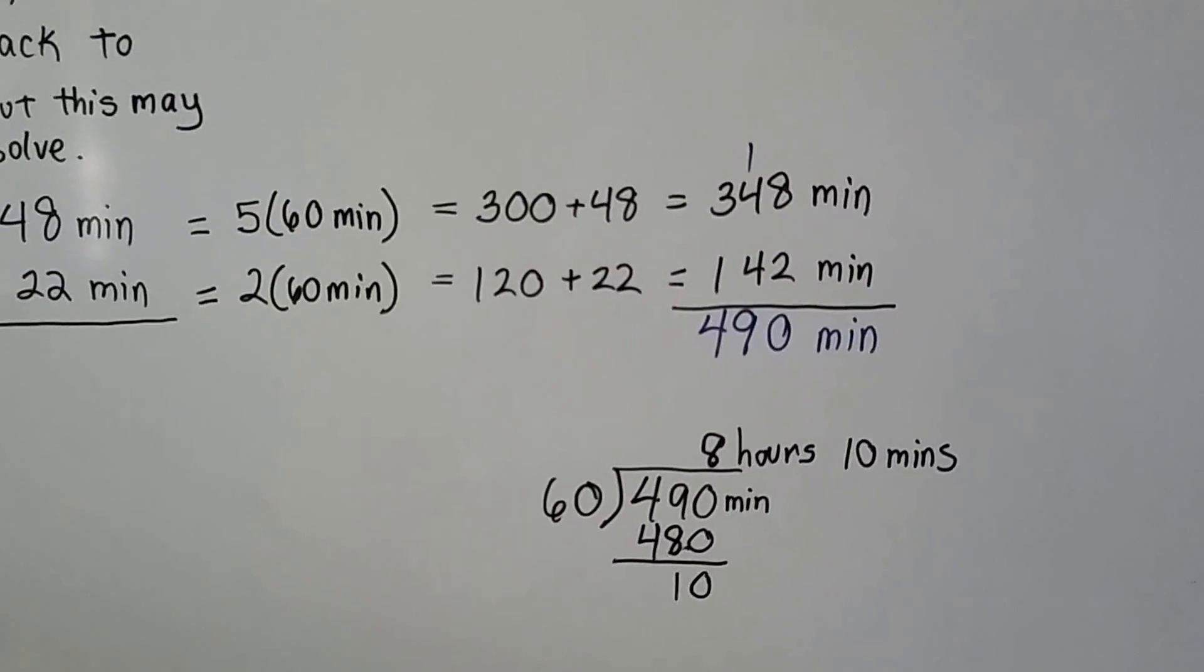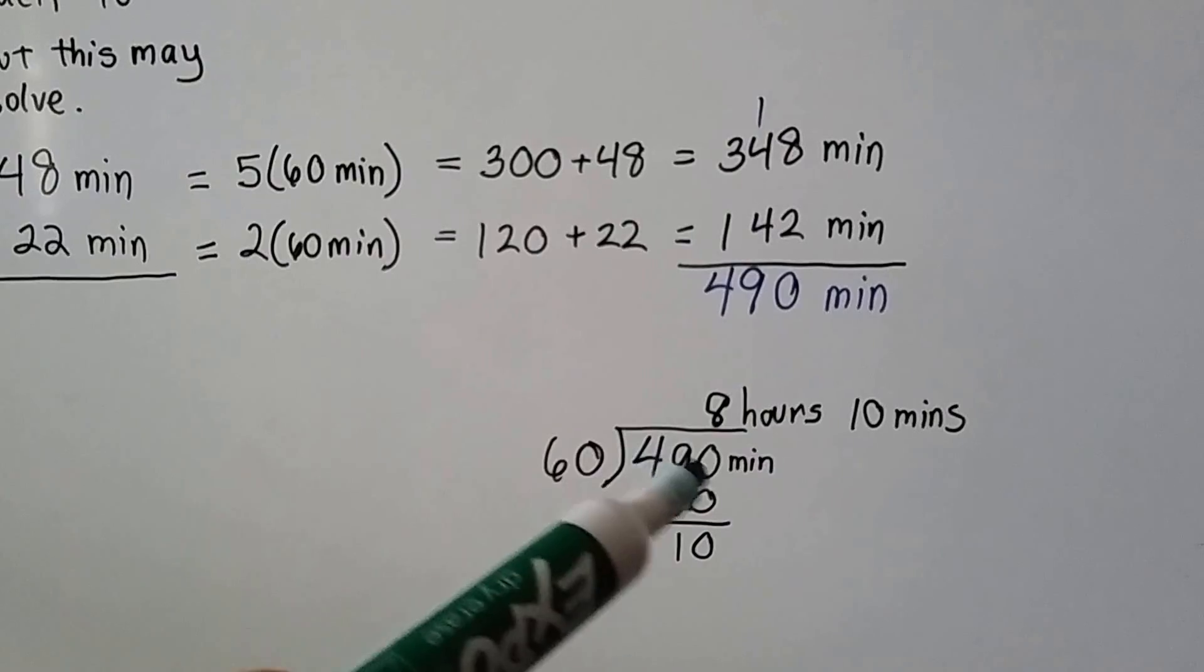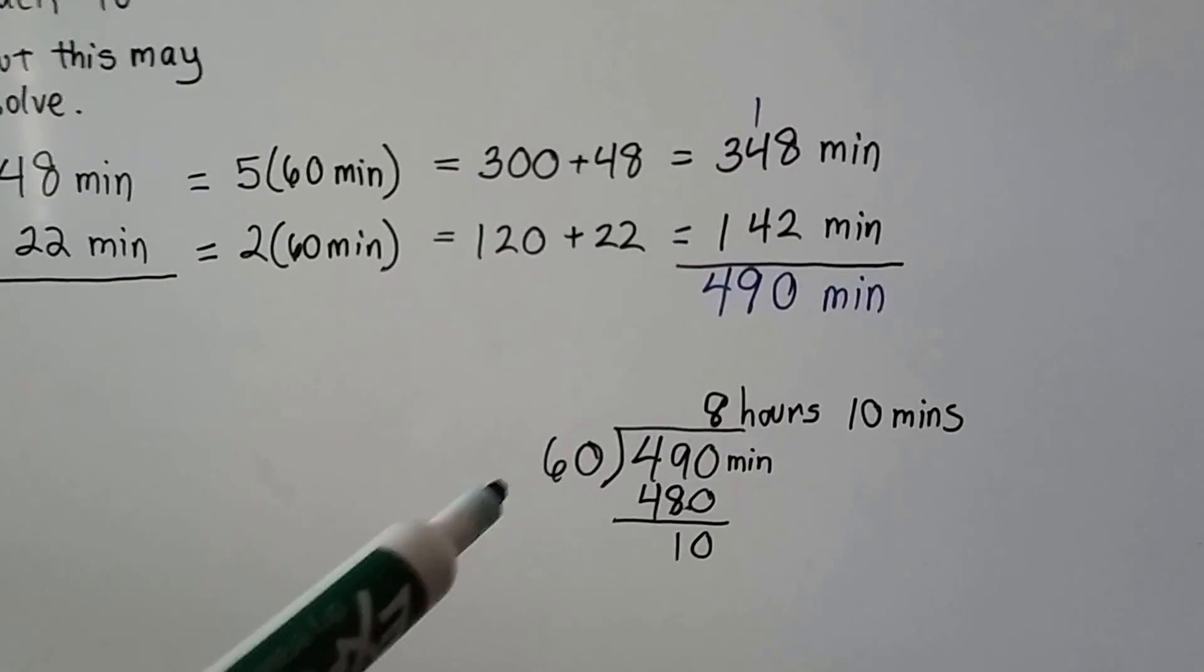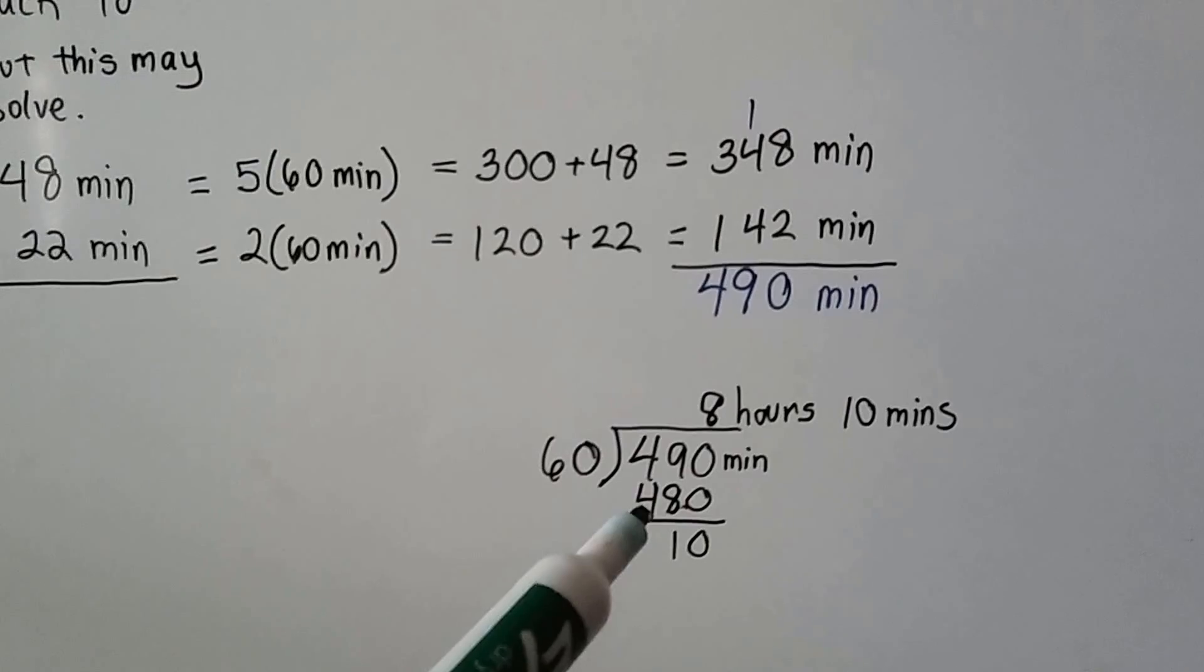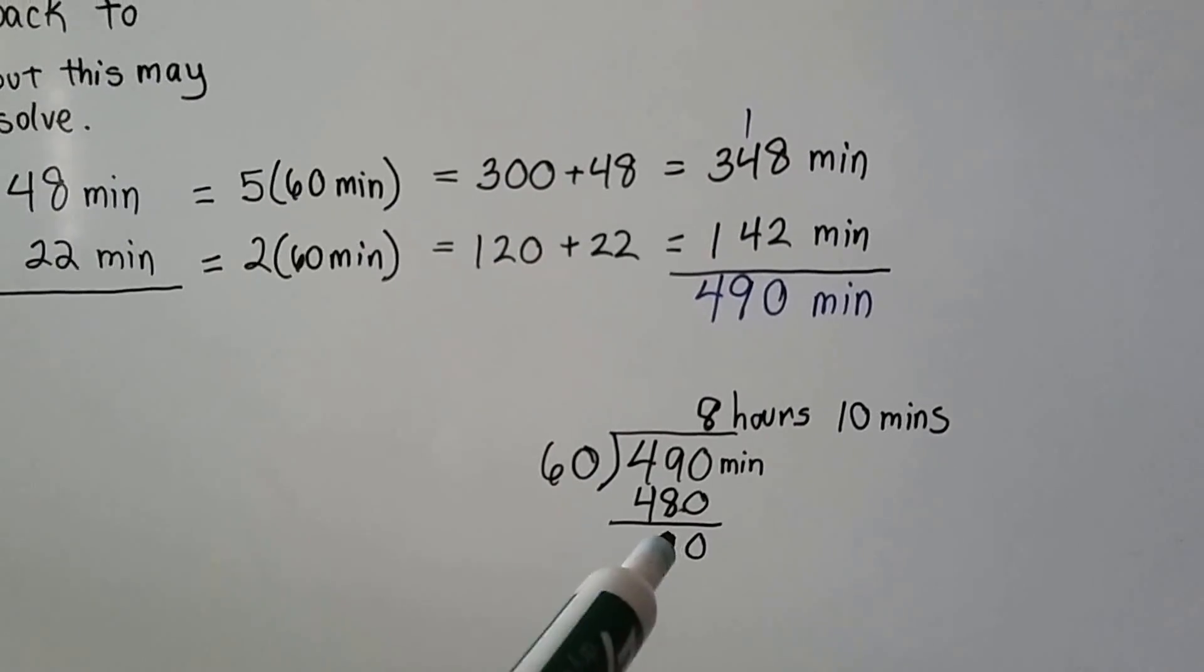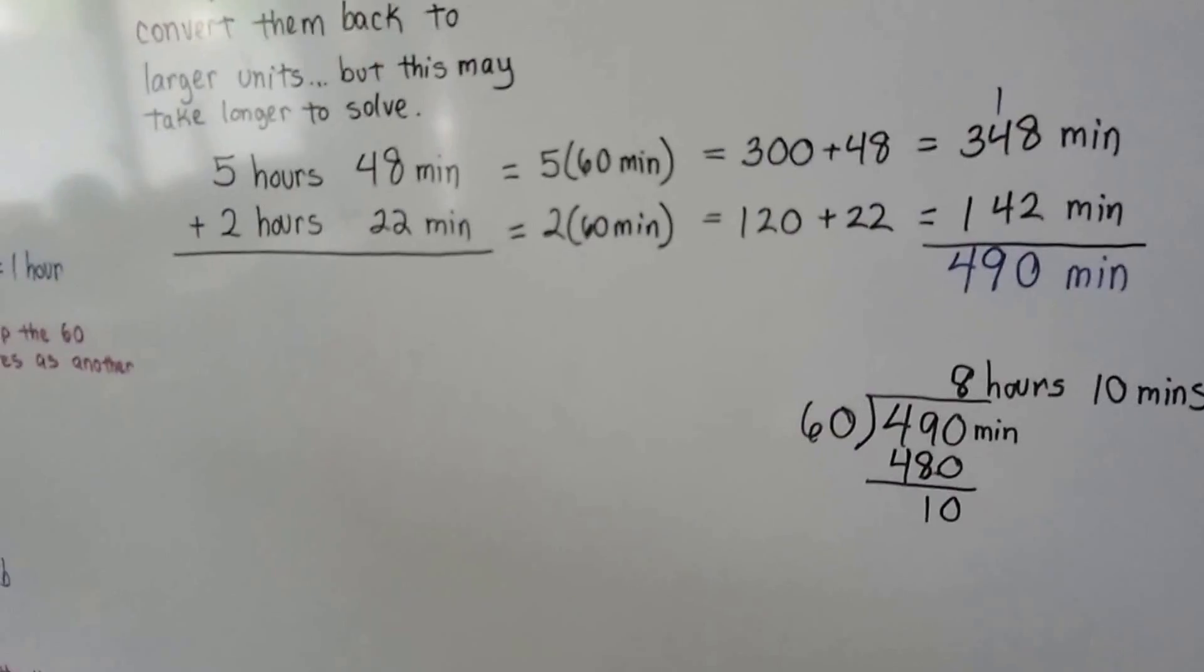Now we have to divide it by 60 to break it into hours to simplify it. So now we have to do long division. We have to divide 490 by 60. Well, 6 times 8 is 48, so 60 times 8 would be 480. That gives 10 minutes left over. We know we've got 8 hours and 10 minutes.